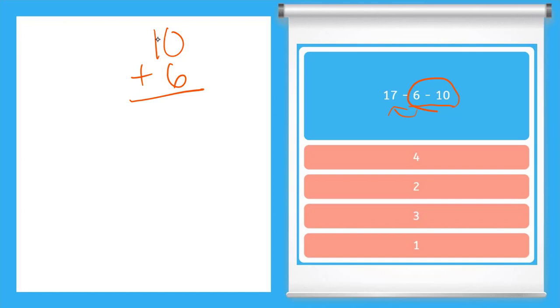10 plus 6 is 16. Now I can take this away from the original 17. So let me do that. 17 minus 16. 7 minus 6 is 1. 1 minus 1 is nothing. My final answer is still 1.